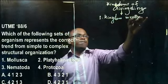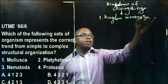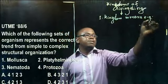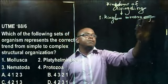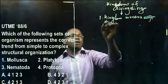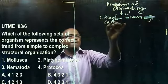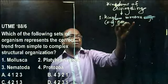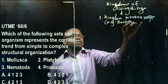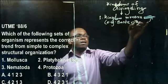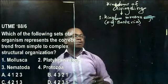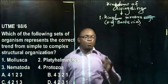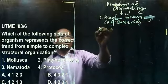Kingdom Monera — examples include bacteria. In other words, it is believed that the first group of living organisms that ever existed were the bacteria.